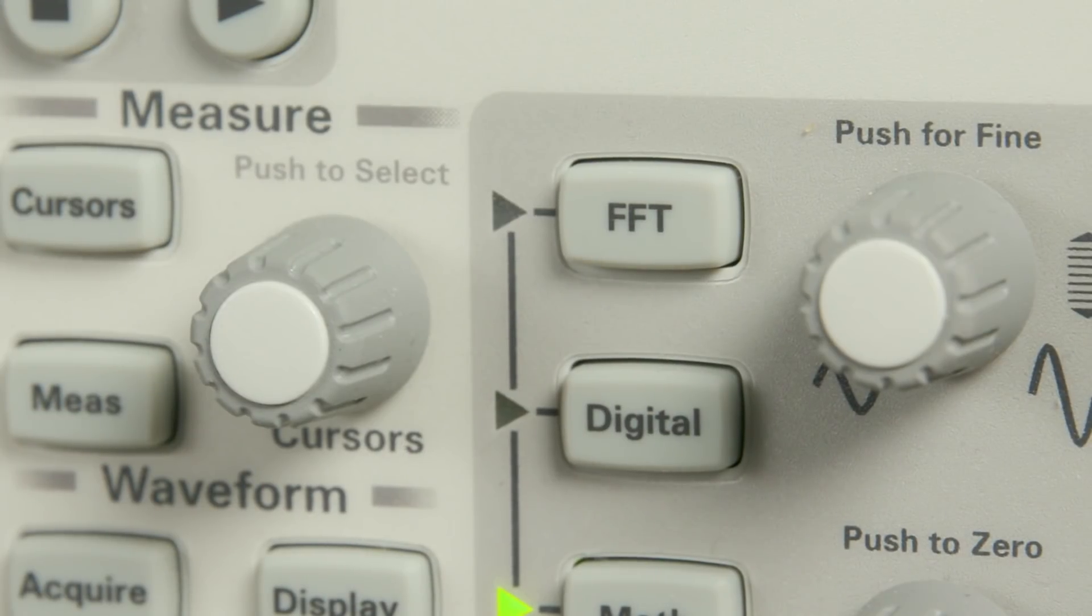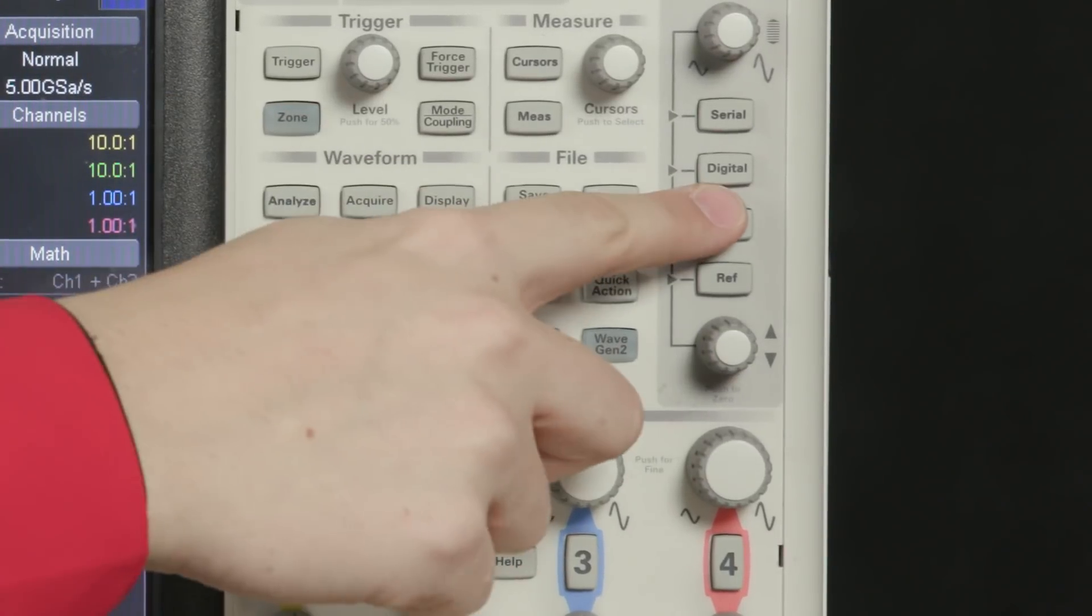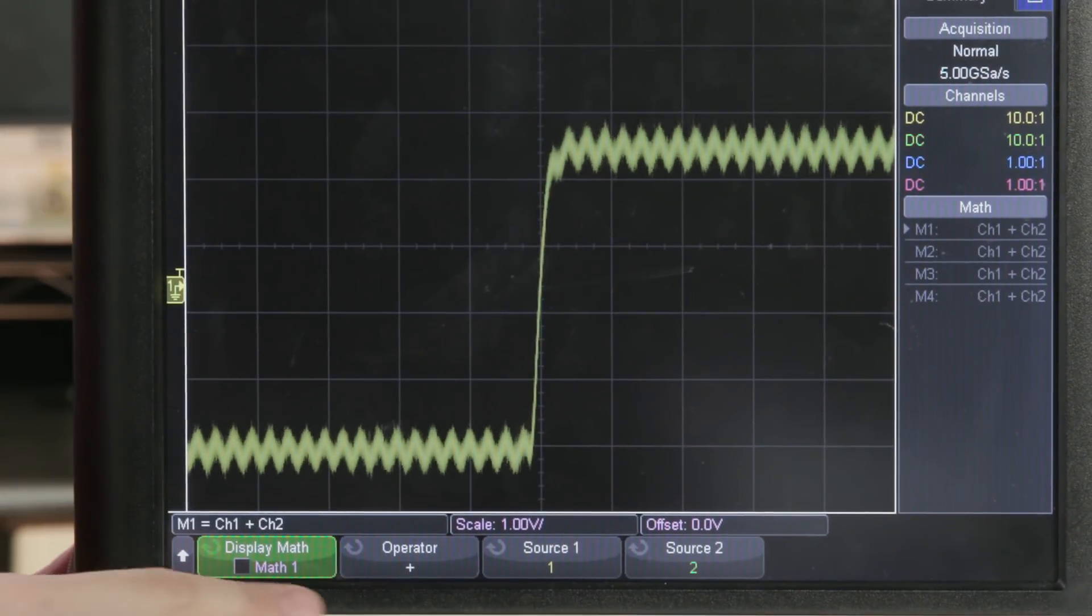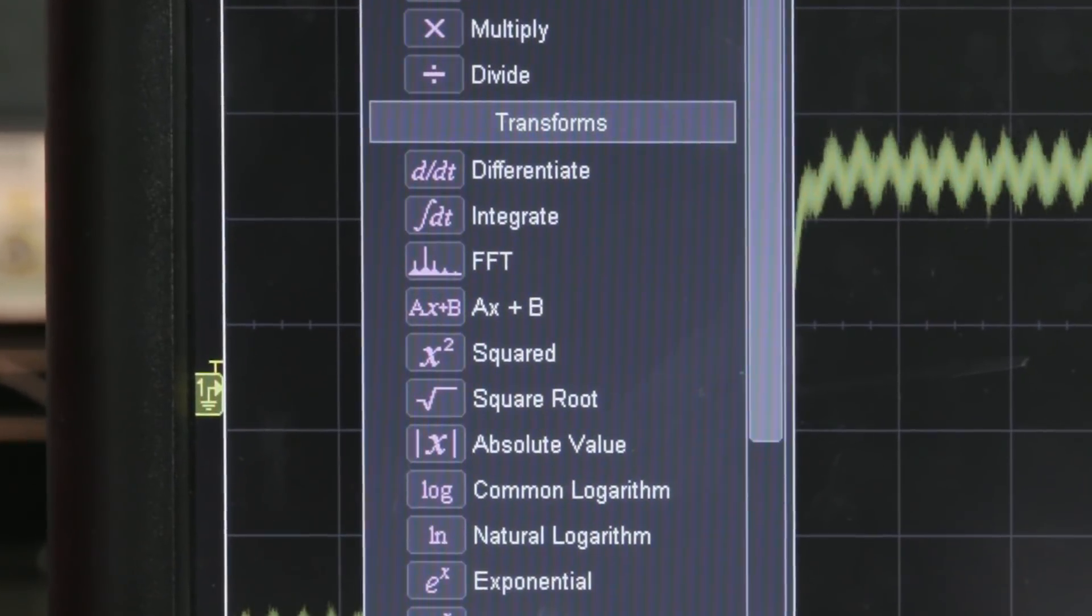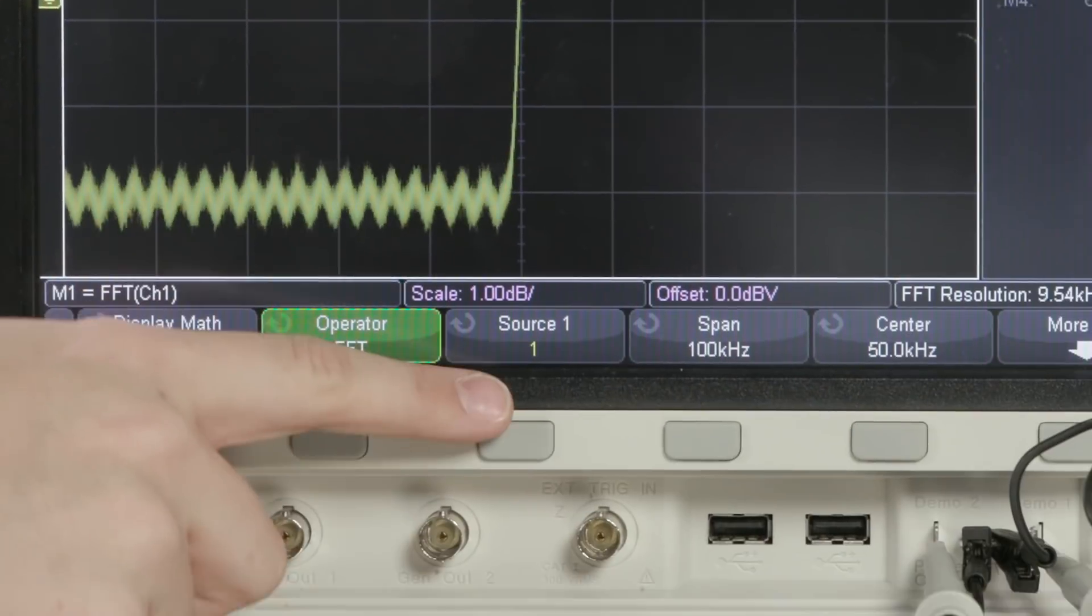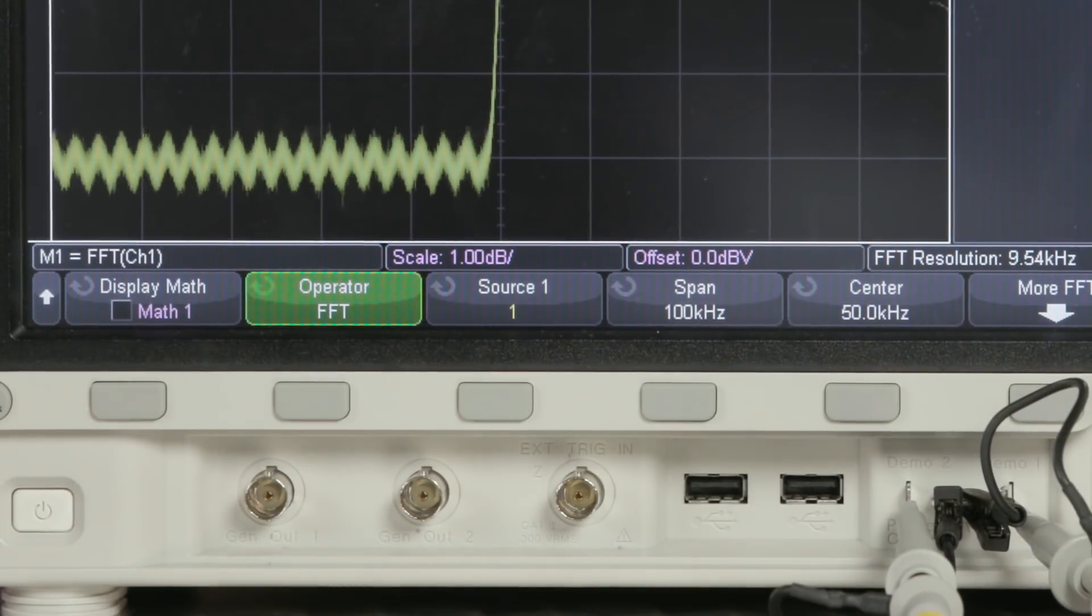Most of the InfiniVision oscilloscopes have an FFT button directly on the front panel, but for the ones that don't, you can just go into the math menu, press display to turn it on, and change the operator to FFT, and then set up the sources with the channels that you're trying to analyze.